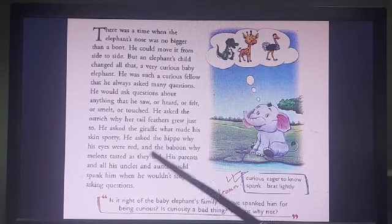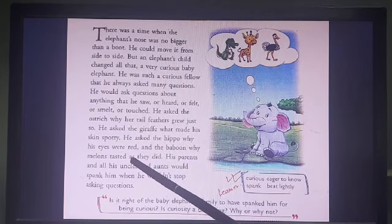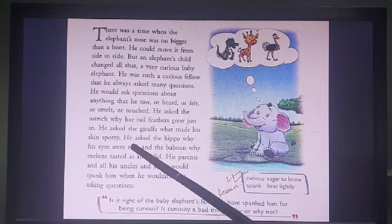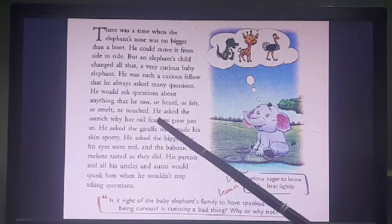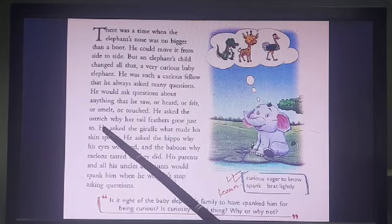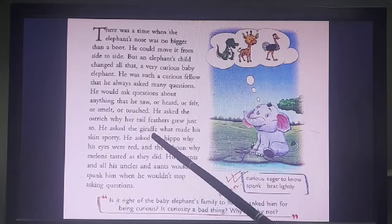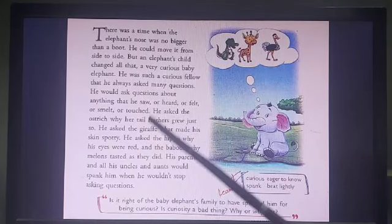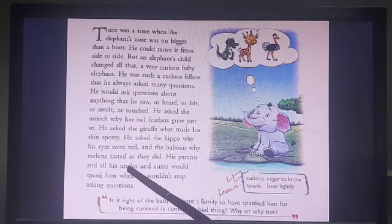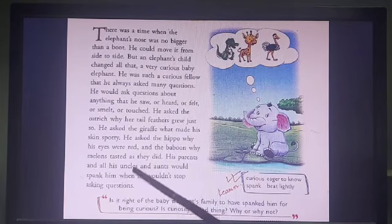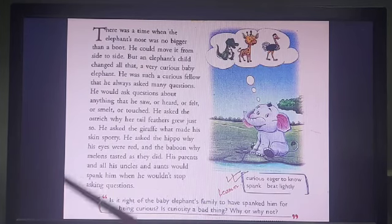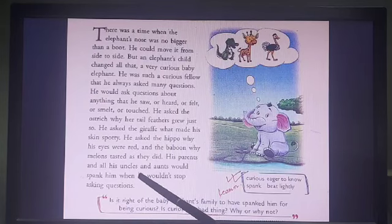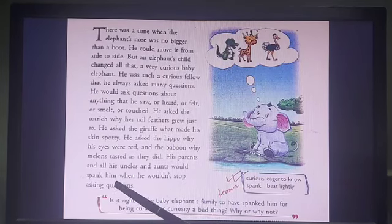By birth, a hippo's eyes are red, but this curious baby elephant wanted to know why. He asked why the ostrich grew feathers and why the giraffe had spotty skin — it was all about 'why.' His parents, uncles, and aunts would spank him — that is, beat him lightly — whenever he wouldn't stop asking questions.